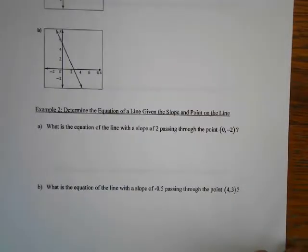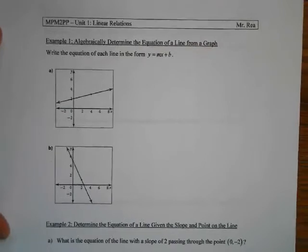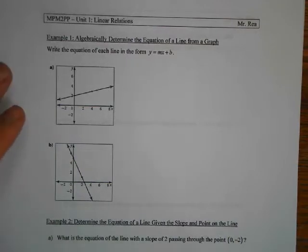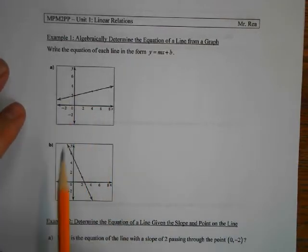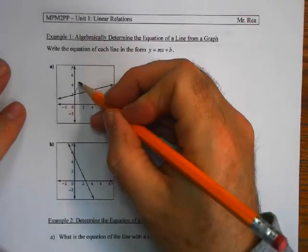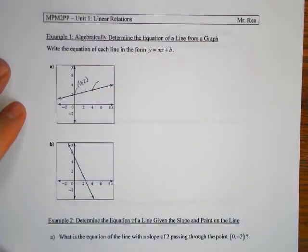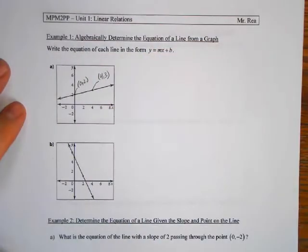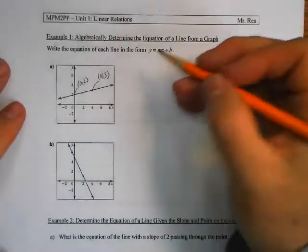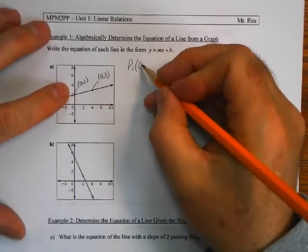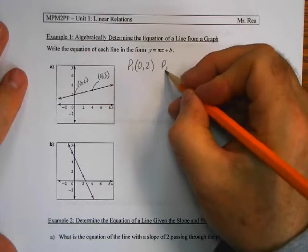So if it seems confusing, hopefully the practice will make it more understandable. In the first example, we're going to still use a graph but figure out the slope algebraically. Looking at the graph, we've got two points identified: the point (0, 2) and the point (4, 3). I'll call them P1 and P2 so it relates back to the formula. So P1 is (0, 2) and P2 is (4, 3).